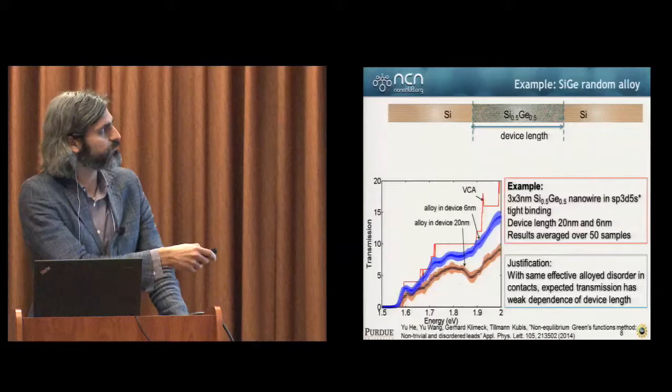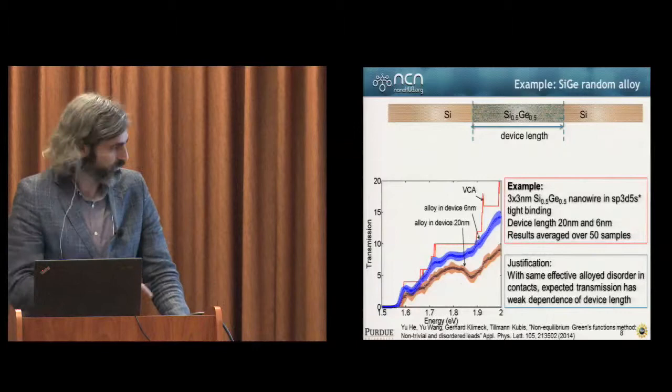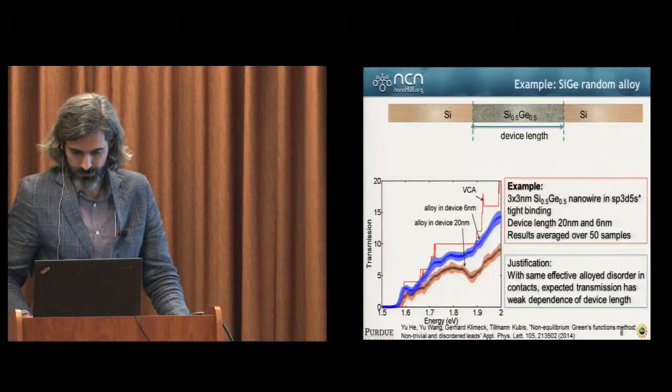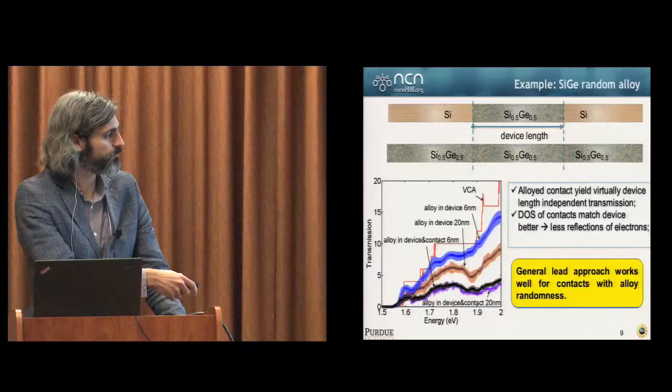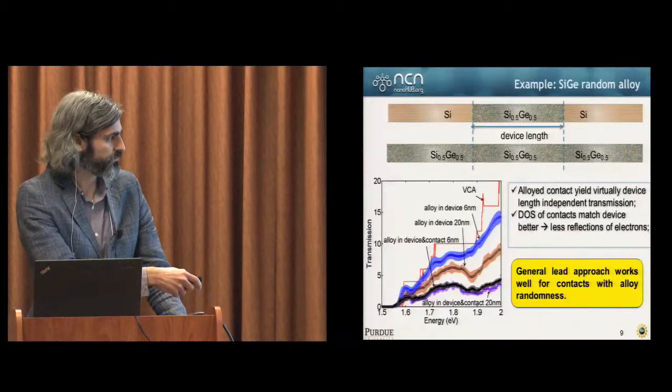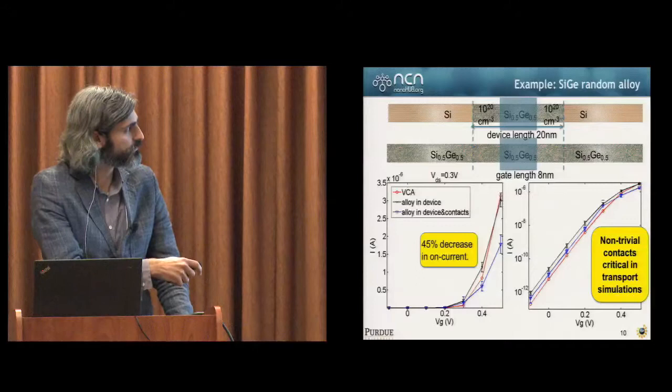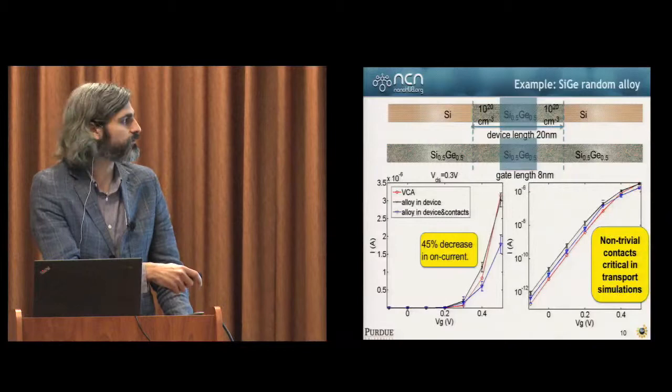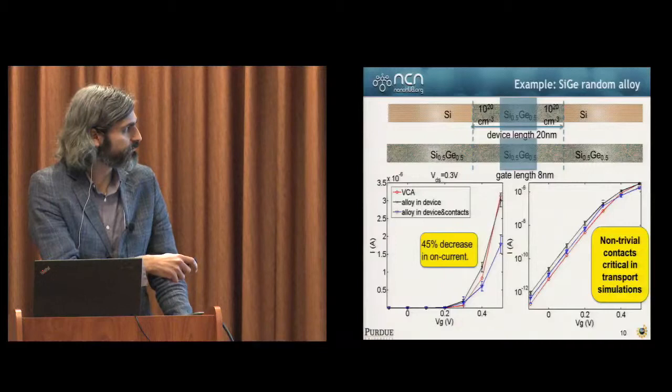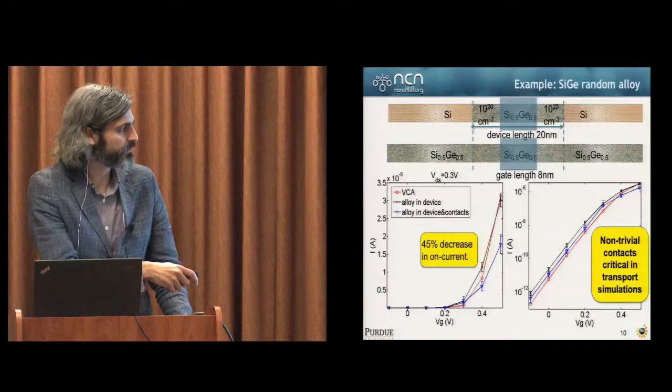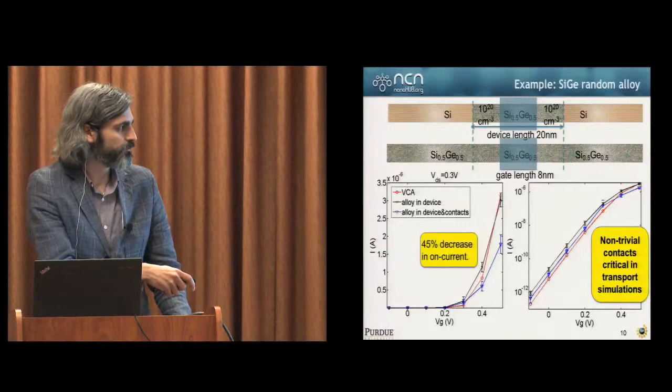We've done this with two different device lengths, the 6 nanometers and the 20 nanometers. Here on the left, we're showing transmission versus the energy. The important thing to note is that once you add in the contacts, your transmission takes a big hit, both for the 6 nanometer here in black and then the 20 nanometer in purple. The important thing to note is that you end up with getting about a 45% decrease in the on current. The VCA is the virtual crystal approximation. If you do the simulation with just the alloy and the device, you've got this black line here. If you start doing the alloy and the device and contacts, you end up with this blue line.